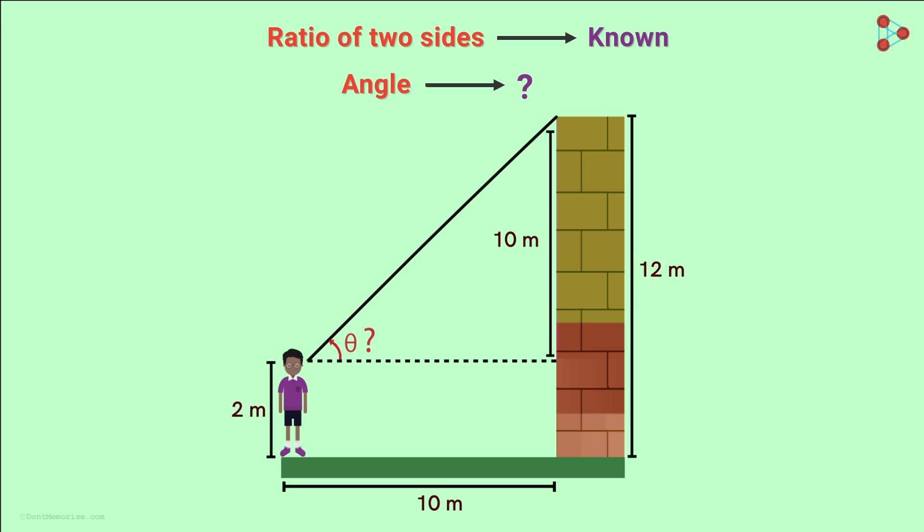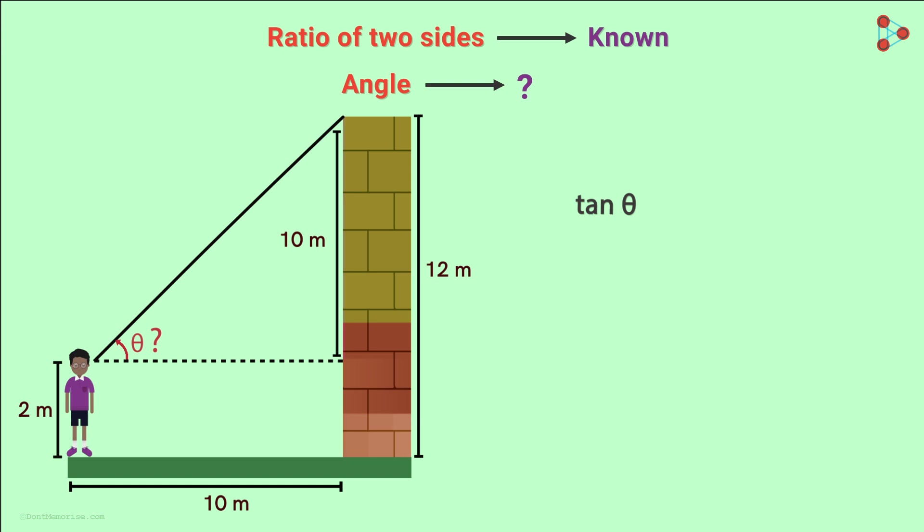Related to these sides, we know the trigonometric tangent function. Tan theta is the ratio opposite over adjacent. Now we know the value of this ratio and we want to find the angle theta.